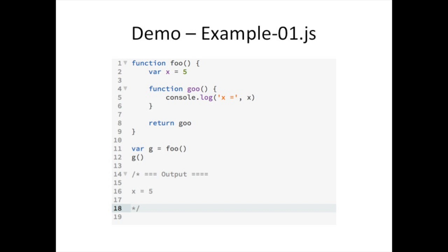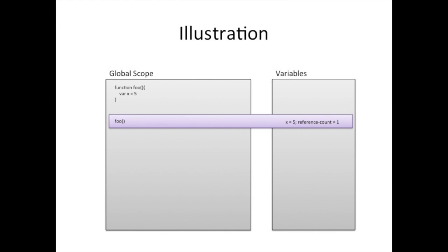Let me try to explain what's going on behind the scenes with reference counting. When I define and run foo, the variable x comes into existence with the value five. The system keeps a reference count — basically how many pieces of code or functions with their own scope are using that variable. When x is created, the count is one. When the function ends and is no longer using that variable, the count goes to zero and it gets cleaned up.